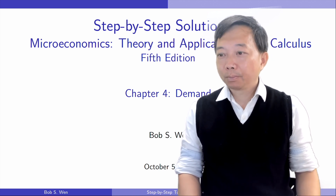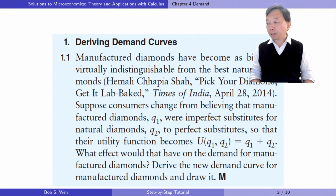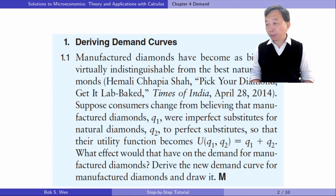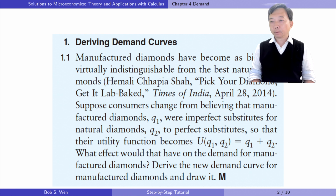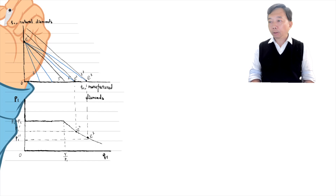Let's look at exercise 1.1. Manufactured diamonds have become as big and virtually indistinguishable from the best natural diamonds. Suppose consumers change from believing that manufactured diamonds Q1 were imperfect substitutes for natural diamonds Q2 to perfect substitutes, so that their utility function becomes linear. What effect would that have on the demand for manufactured diamonds? Derive the new demand curve for manufactured diamonds and draw it. In the indifference curve budget constraint diagram, the horizontal axis measures manufactured diamonds and the vertical axis measures natural diamonds.